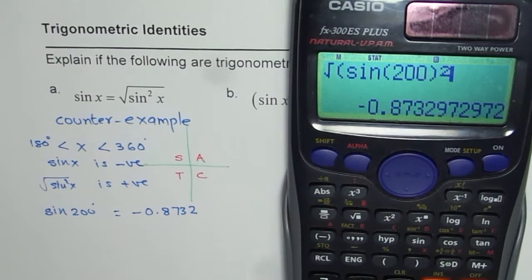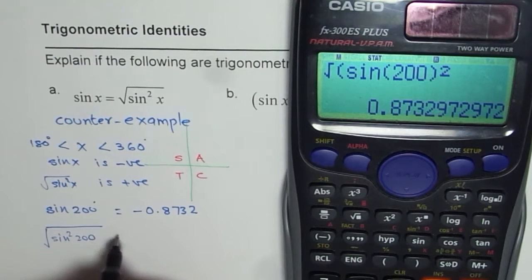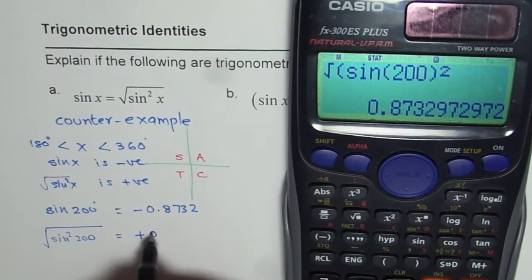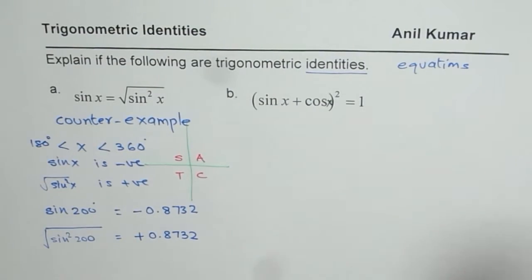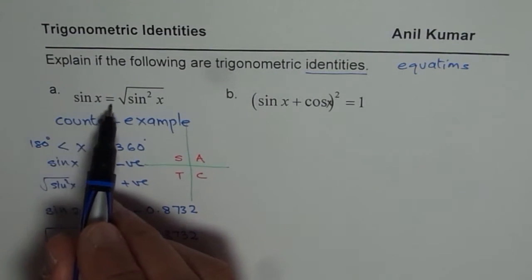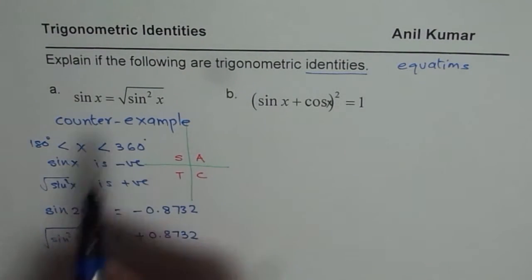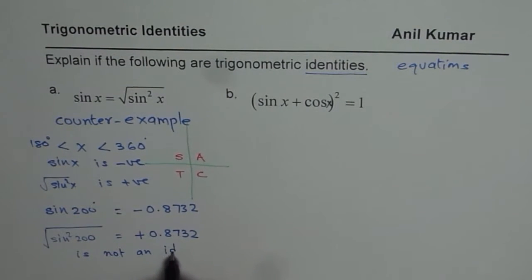What we get? We get square root of sin square 200 as equal to plus 0.8732. Since these values are not equal, we say that sin x equals square root of sin square x is not an identity.